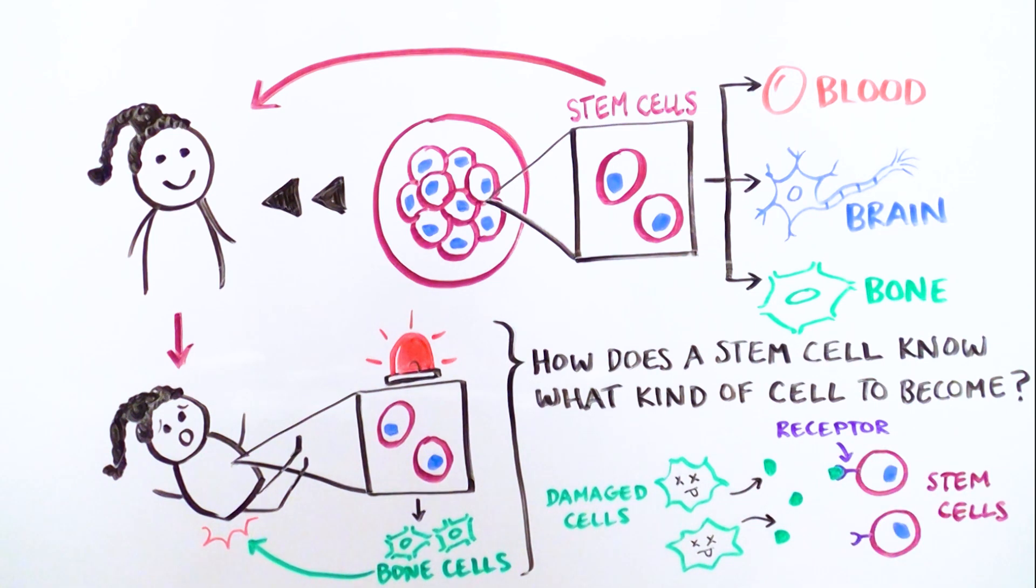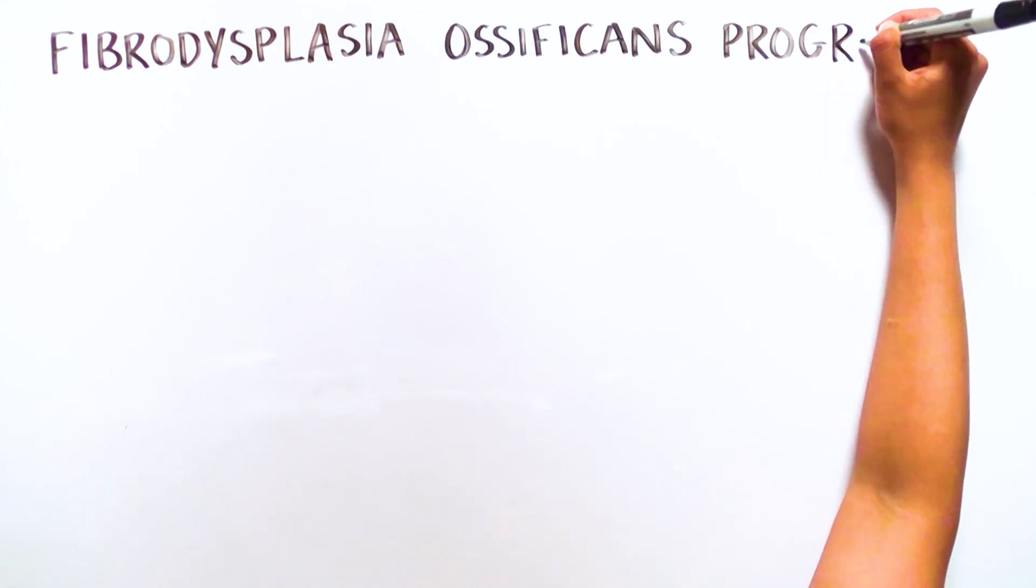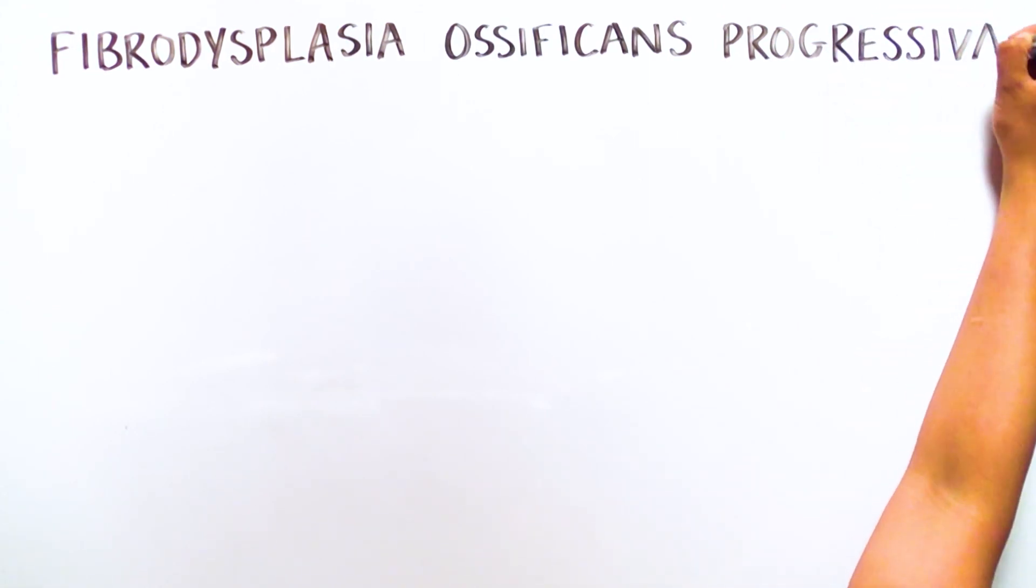For most of us, this process of continual repair is relatively smooth. This is not the case for those with a rare genetic disease called fibrodysplasia ossificans progressiva, or FOP.